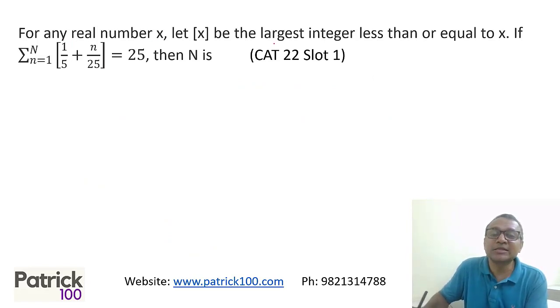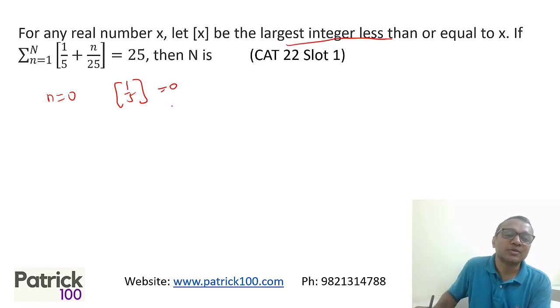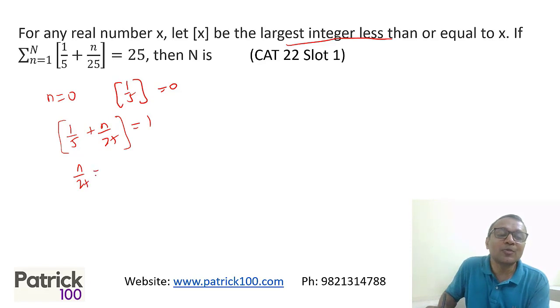Next. For any real x, [x] is the largest integer less than equal to x. Try to find pattern and see. For example, if I put n equal to 0, small n equal to 0, I will get this as 1 upon 5, which is 0. Largest integer less than equal to x. I want 1. When will I get 1? When 1 upon 5 plus n upon 25 is equal to 1. At that point of time, this whole thing will be 1. So what will be n? n will be 1 upon 5 minus, or 1 minus 1 upon 5, 4 upon 5. n will be 20. So at n 20, we get it as 1. At n 20, we get it as 1.